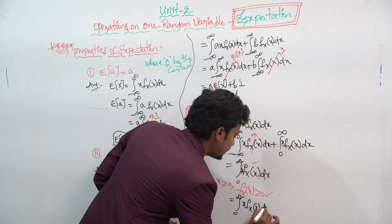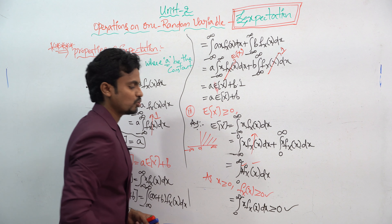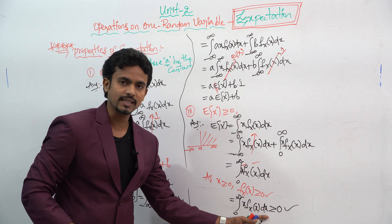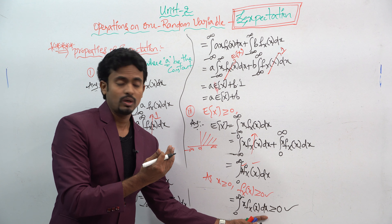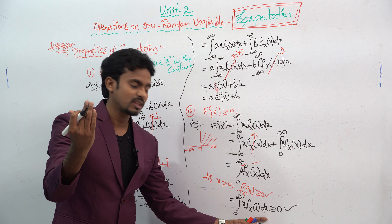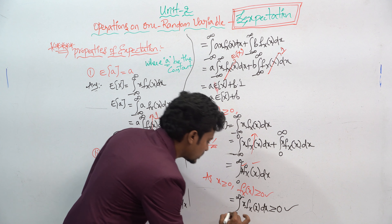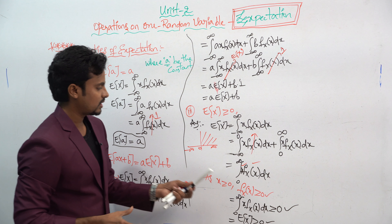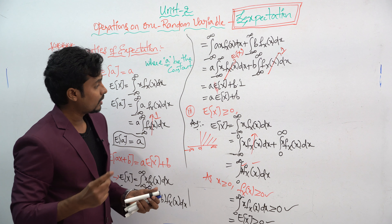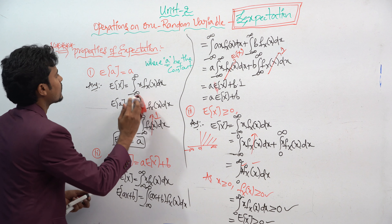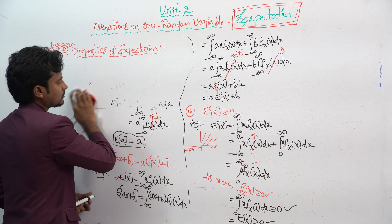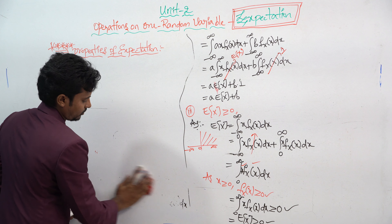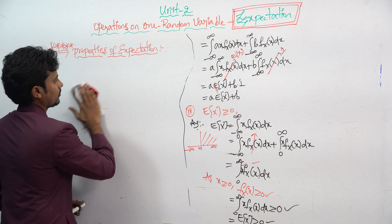Since x ≥ 0 and similarly f(x) ≥ 0 for x ≥ 0, the integral from 0 to infinity of x times f(x) dx is non-negative. You can't take the full interval; you take from 0 to infinity, which is the positive case. Therefore E(x) ≥ 0. This was our third property.